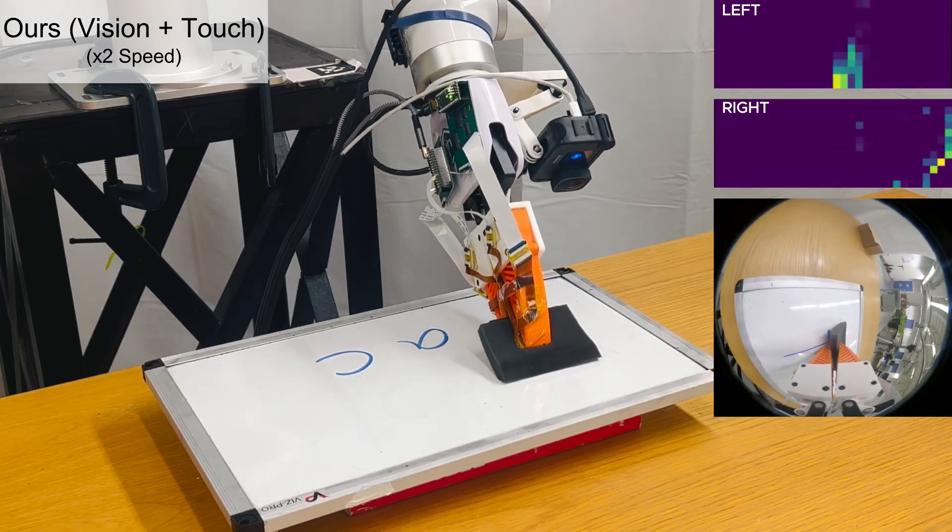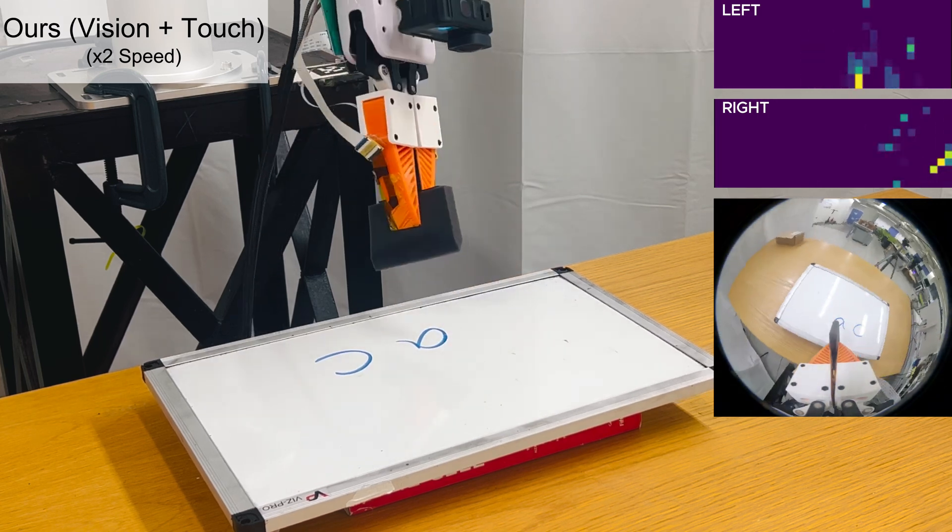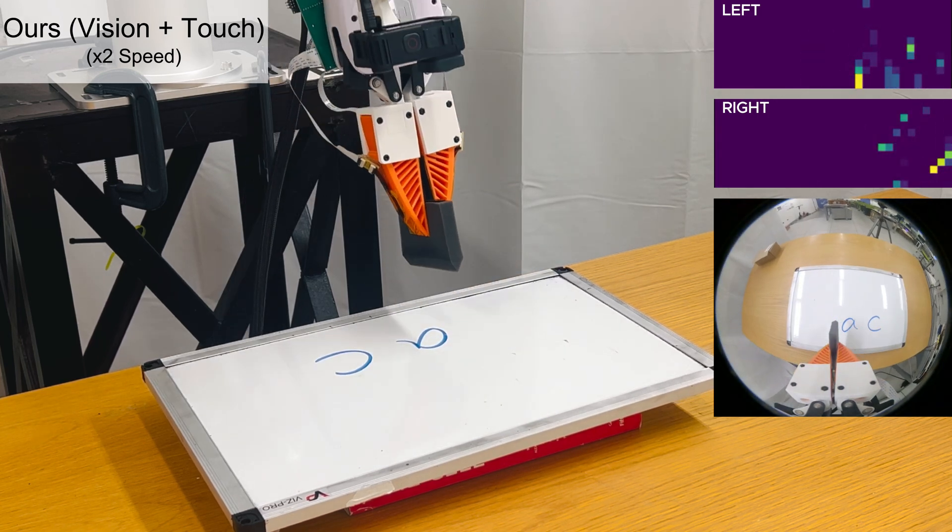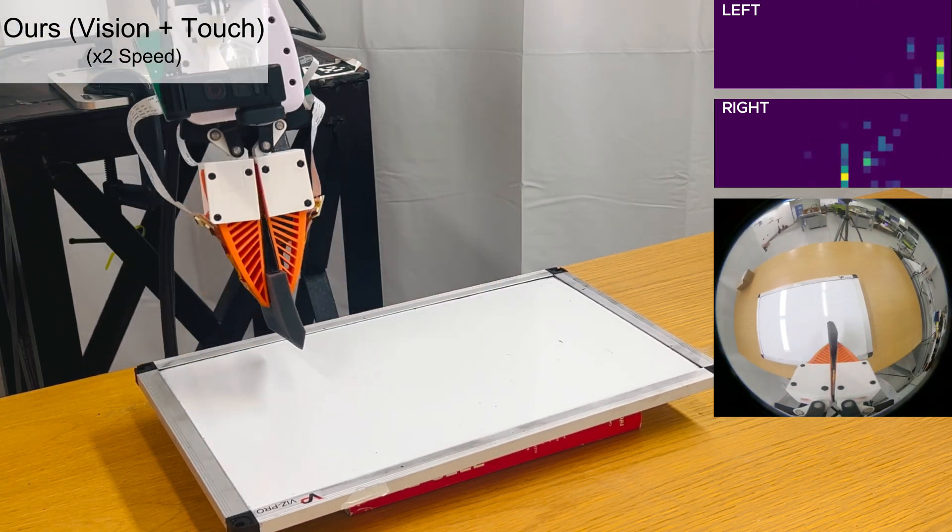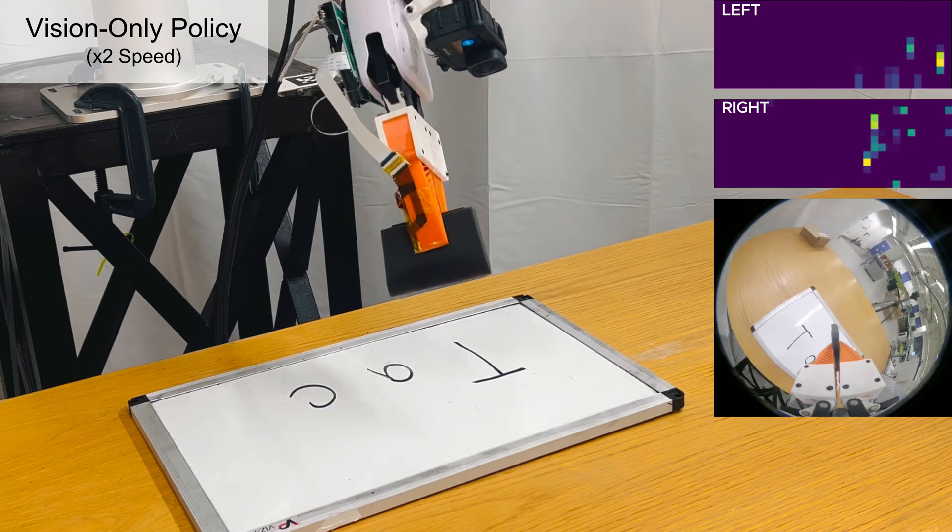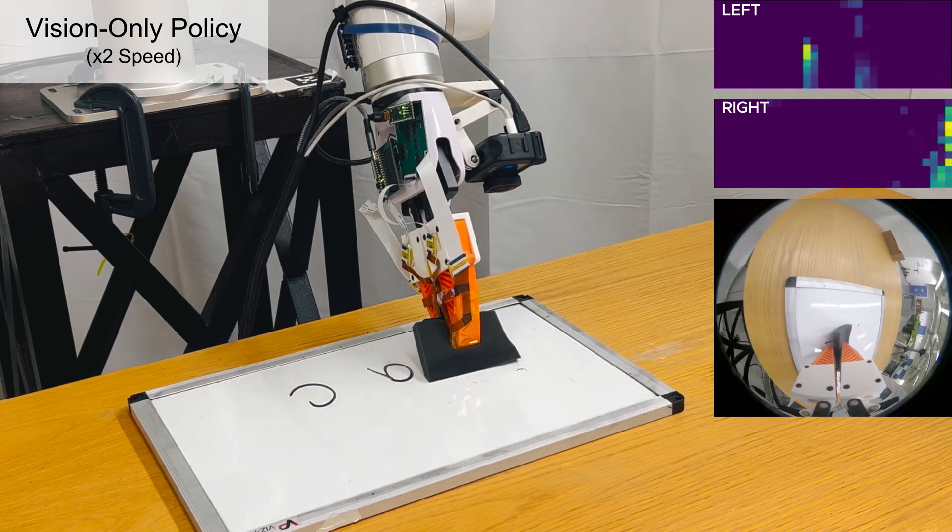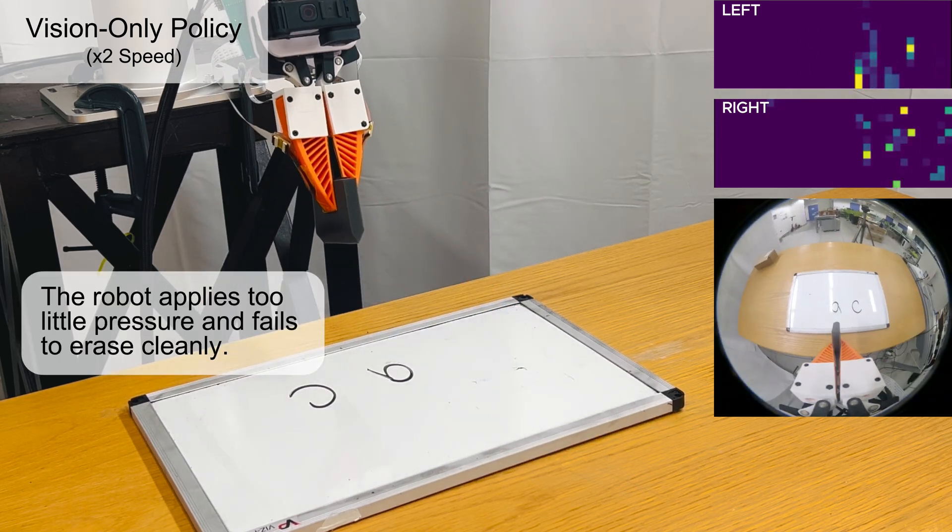In whiteboard erasing, our policy uses tactile signals to detect contact and modulate erase force. The vision-only policy, lacking force feedback, applies too little pressure and fails to erase cleanly.